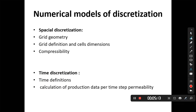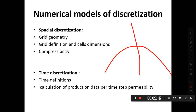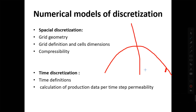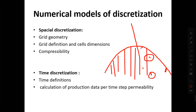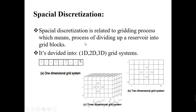Spatial discretization means — again, you have a reservoir and the saturation here or the saturation there are not the same. Here may be oil, here may be water, above may be gas. So saturation is also changing. We have to divide the reservoir into small grid blocks, define their properties separately, and that is how we convert the big reservoir into small grid blocks.